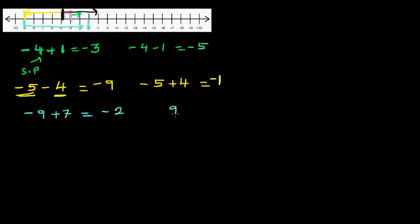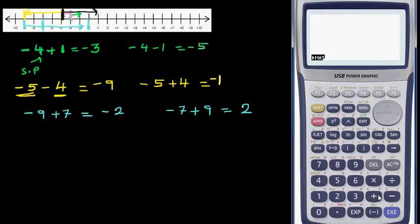What if it is negative seven plus nine? You're starting at negative seven and you're going nine steps to the right. If you count nine steps to the right you'll reach positive two. On the calculator: negative nine plus seven is negative two, and negative seven plus nine is positive two.